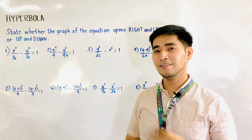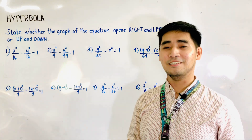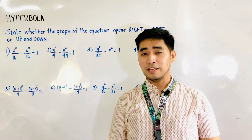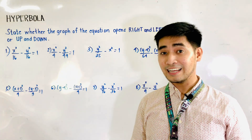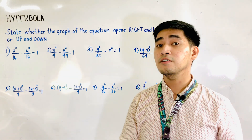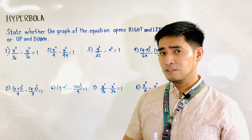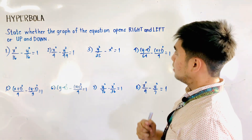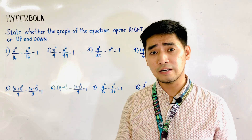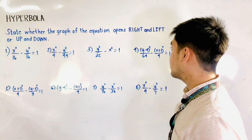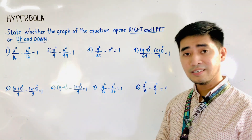Hi Judgers! Welcome to another segment of Juan Arliwag Memorial High School Senior High School Math TV. Last time we were able to determine the dimensions of the fundamental rectangle or the auxiliary rectangle of the given hyperbola. So what if we're now asked to determine the nature of the graph of the given hyperbola? When we say nature of the graph, it could either be right and left or up and down — this is the direction.